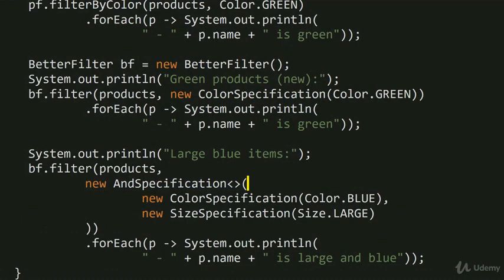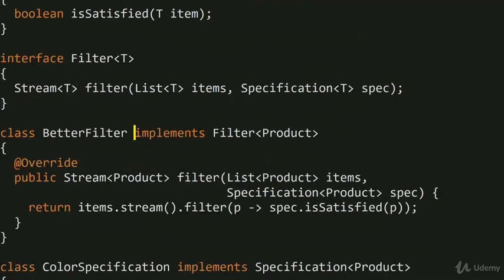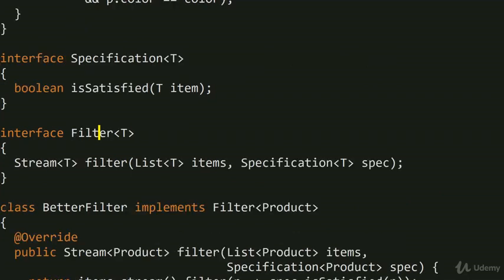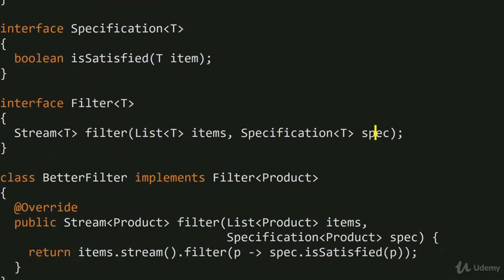The takeaway from this example is that we learned about the Open-Close Principle: open for extension — it's okay to inherit things or implement interfaces — but closed for modification. At no point would you want to jump back into BetterFilter and modify it. If you want additional functionality, you have Specification<T> for checking whether an item satisfies a criterion, and Filter<T> for returning only items which satisfy the appropriate specification. That's the gist of both the specification pattern and the Open-Close Principle.